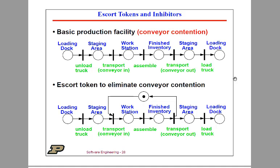Here are some examples of the transitions represented by the operations of this production facility. When a token appears in the loading dock, that means the transition representing 'unload the truck' is now enabled — it's ready to fire. In other words, it's ready to have the truck unloaded. Then the inventory is going to end up in the staging area.